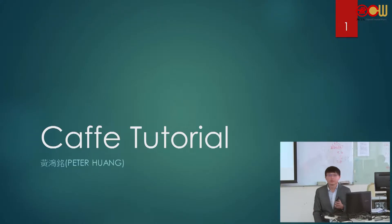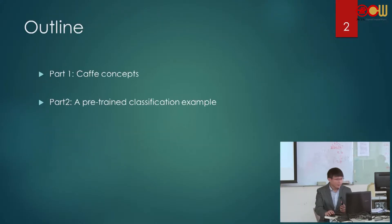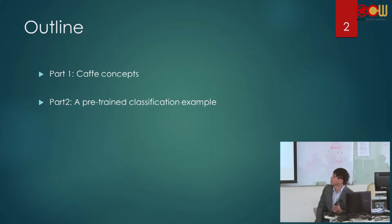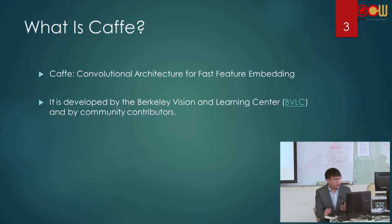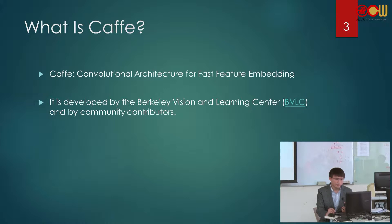Today I'm going to give a Caffe tutorial, and this tutorial will have two parts. Part one is the Caffe concept, and part two is a pre-trained classification example. Caffe's full name is Convolutional Architecture for Fast Feature Embedding, and it's a deep learning framework which is easy to use.